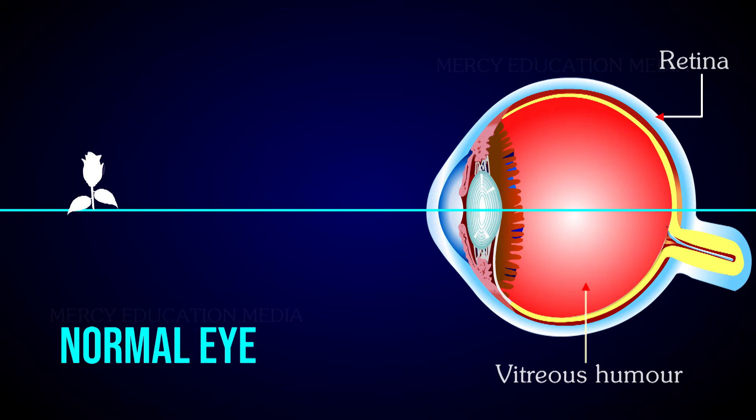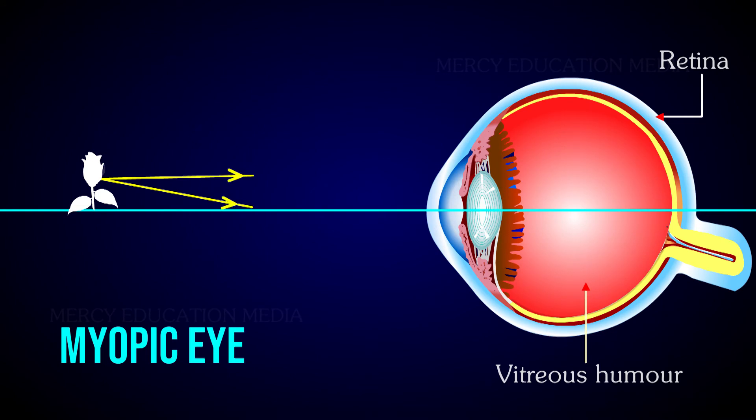In the case of a normal eye, the rays of light from the flower fall on the eye and converge on the retina, whereas in the case of a myopic eye, the light rays are focused in front of the retina.